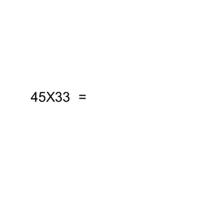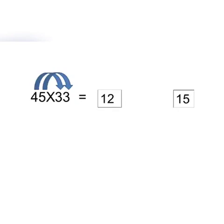Now, let's take a complex number: 45 times 33. So, the product of the tens digits is 12. Product of the ones digits is 15.